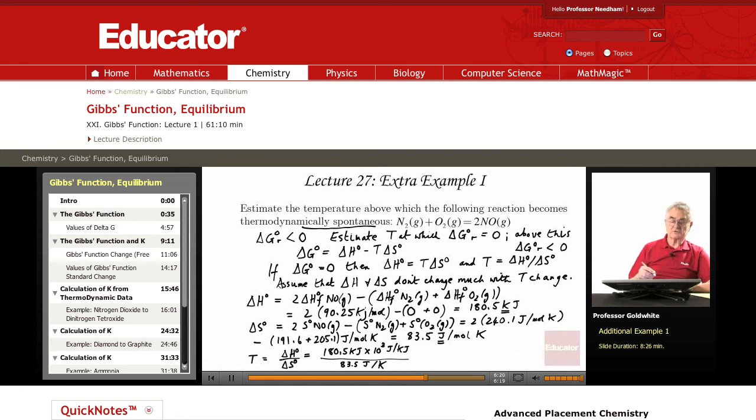We can, the moles cancel out. And if we do that division, we see that that becomes about 2.2 times 10 cubed kelvin, or about 1900 degrees Celsius.